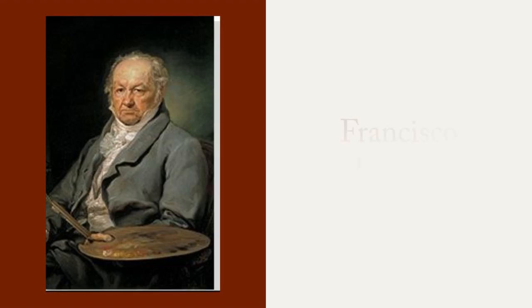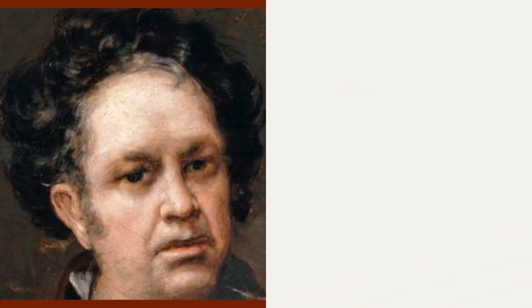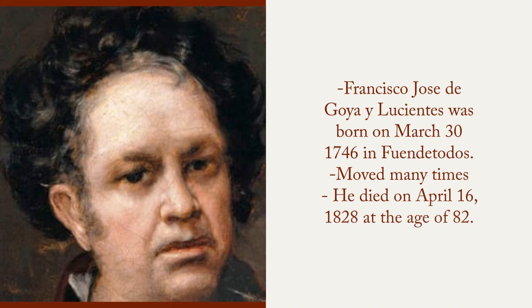Hello, my name is Catalina Trejo and my chosen artist for our Art 42 class midterm is Francisco de Goya, who is a Spanish artist. Francisco José de Goya y Lucientes was born on March 30th of the year 1746 towards the north of Spain in a village named Fuente Todos.